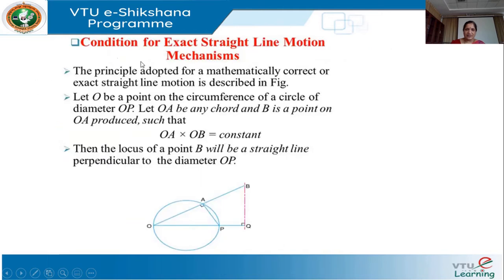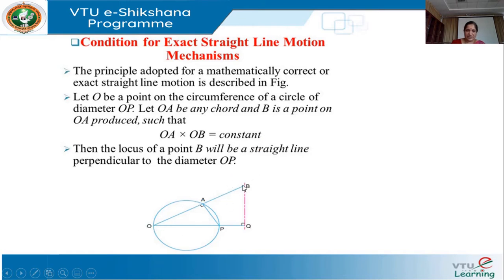Next, the condition for exact straight line motion: the principle adopted for mathematically correct or exact straight line motion is as follows. Let O be a point on the circumference of a circle of diameter OP. Let OA be any chord, and B is a point on OA produced, such that OA multiplied by OB equals a constant.